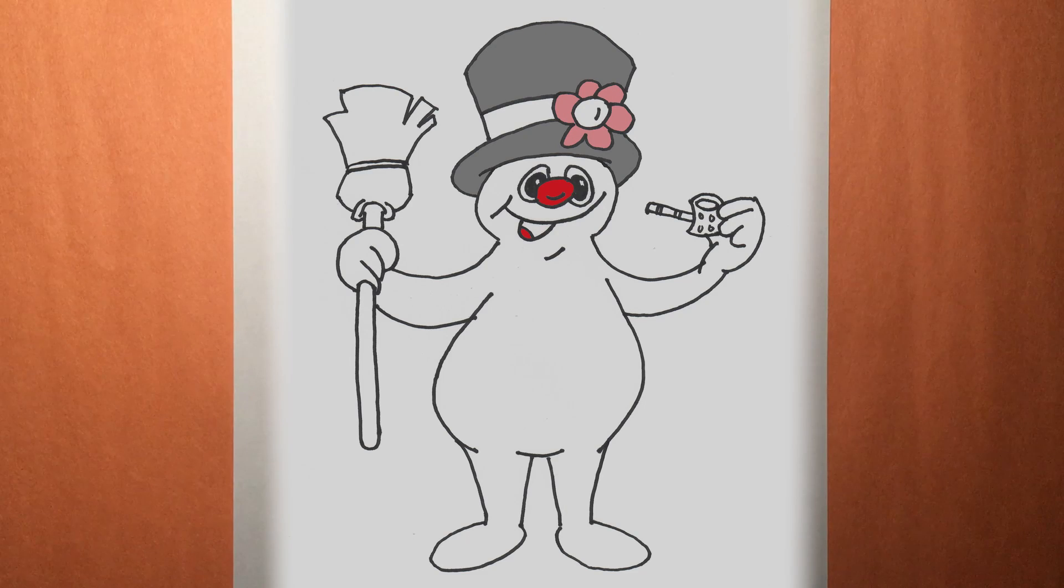And for the flower on his hat, pink. For the broom, yellow. And on the pipe, and brown for the broomstick and inside pipe. Blue for the middle of his flower, and black for his hat band and mouth. Lovely.